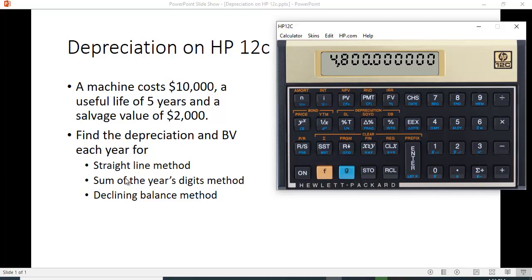If we want to do the sum of the years digits method, which is an accelerated method that allows you to expense off more in early years, you use the same approach.